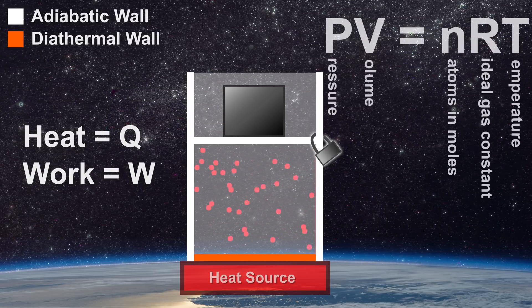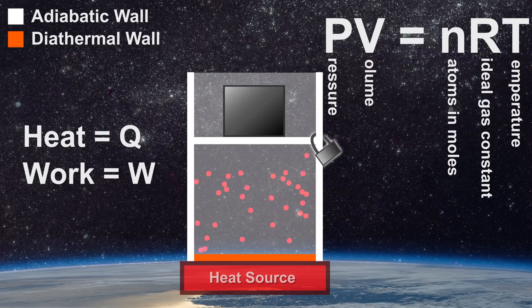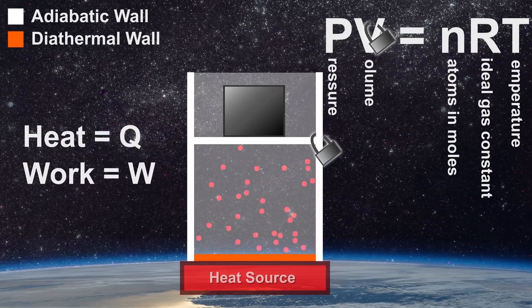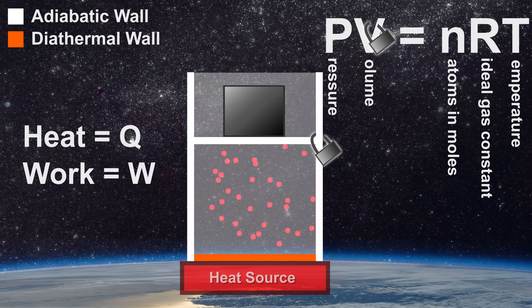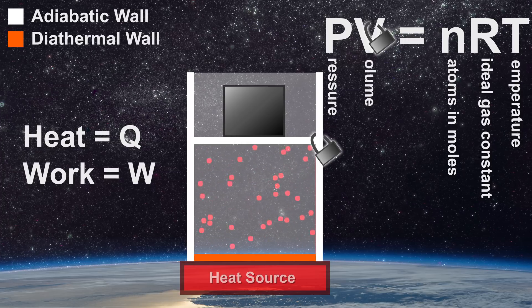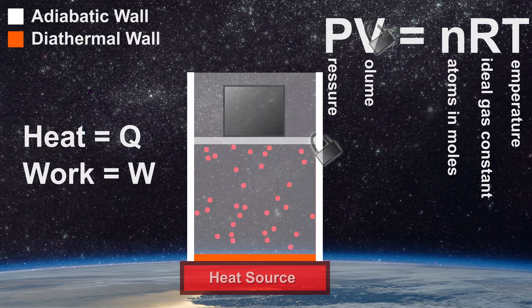The ideal gas law PV equals NRT shows that at constant volume, if T increases, then P must also increase and vice versa. Since the volume in this case is constant, the change is termed as either isovolumic, isochoric or isometric.